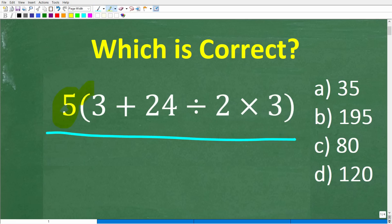We have 5 times parentheses 3 plus 24 divided by 2 times 3 in parentheses. And we have a multiple choice question here. A is 35, B is 195, C is 80, and D is 120.